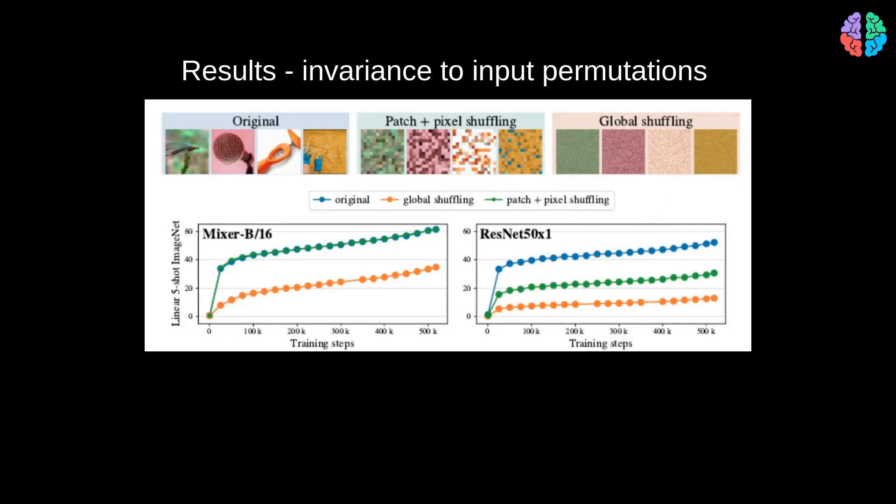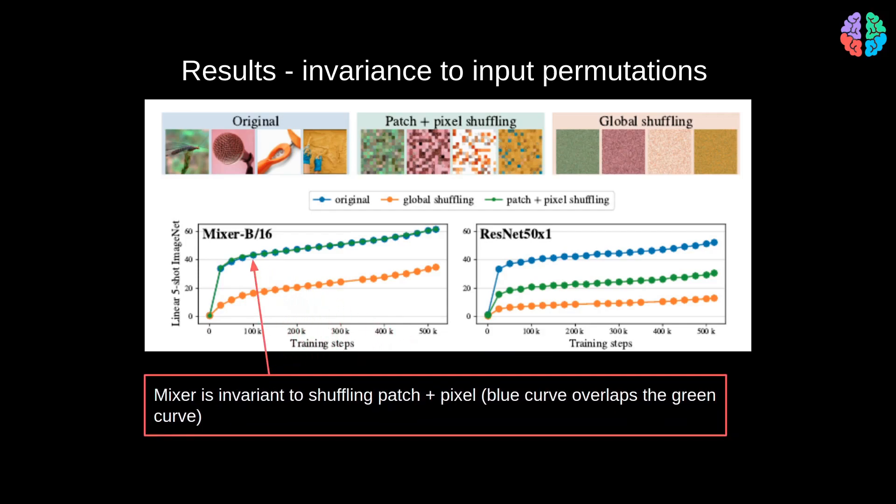CNN architectures have a strong inductive bias towards the order of pixels in the input image. To study if the results are invariant to the change in input, the authors shuffle the patches of the input as shown in this figure and check if it has any impact on the performance of the mixer. The results show that the mixer is much more robust to pixel permutations. Even with a global permutation of the input pixels, the mixer performance drop is far less compared to the drop in performance of ResNet.